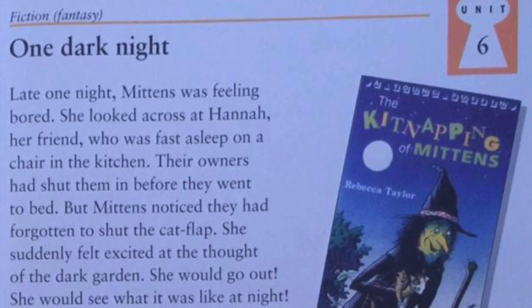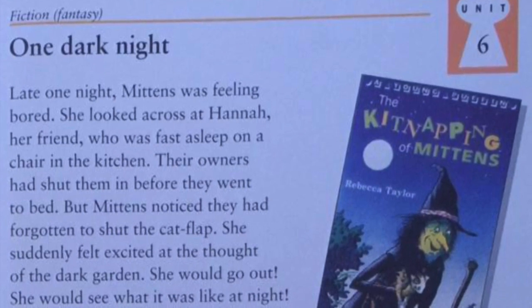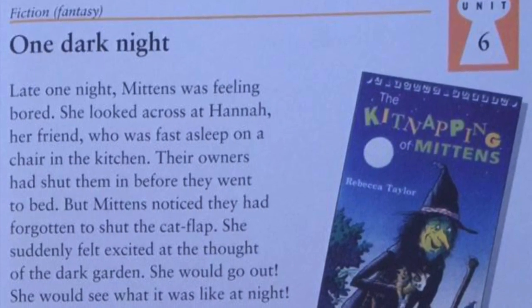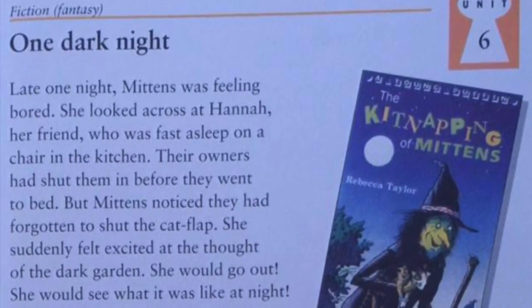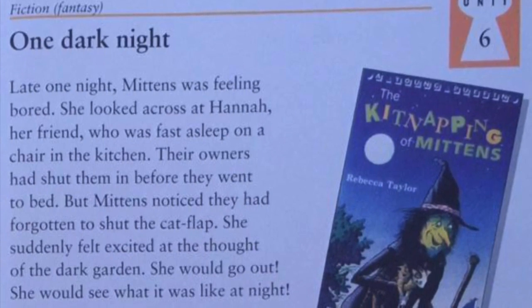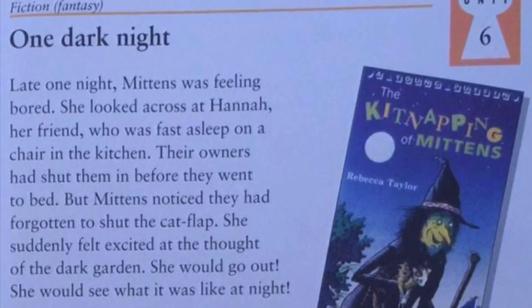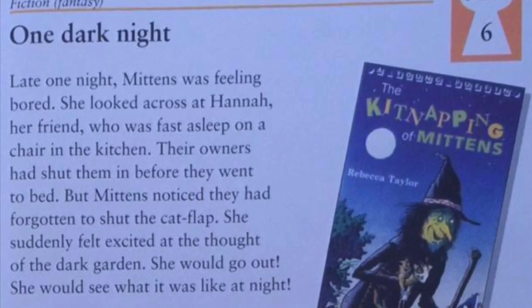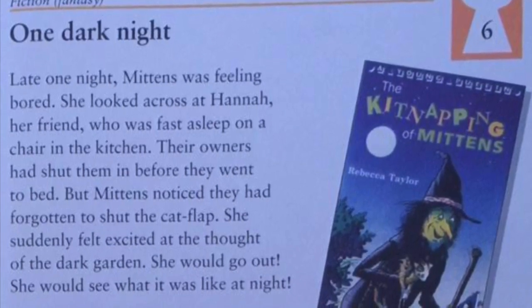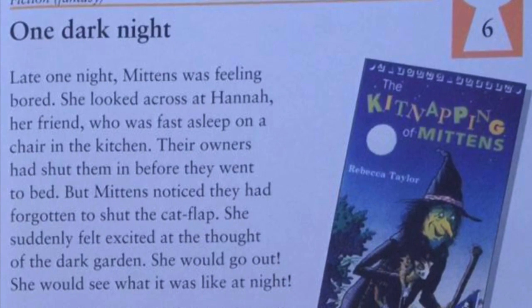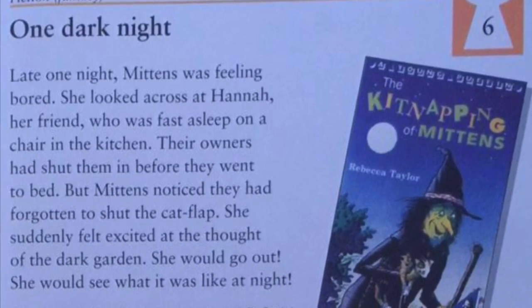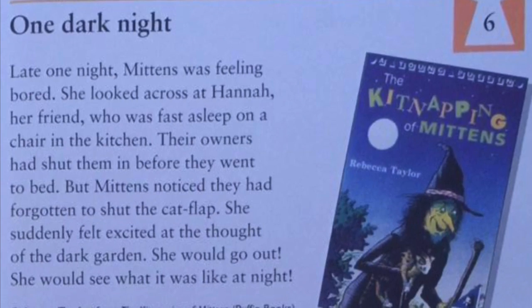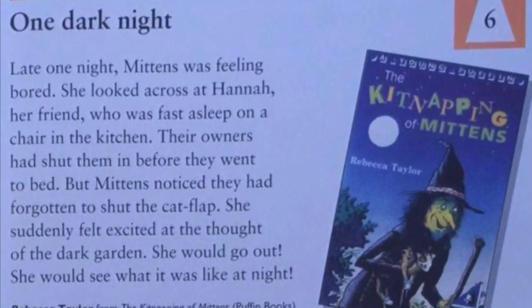Now we will read out the passage. So let's get started. One Dark Night. Late one night, Nitens was feeling bored. She looked across at Hannah, her friend, who was fast asleep on a chair in the kitchen. Their owners had shut them in before they went to bed.